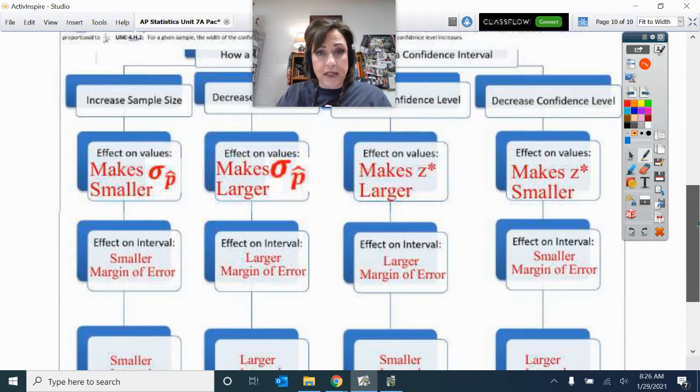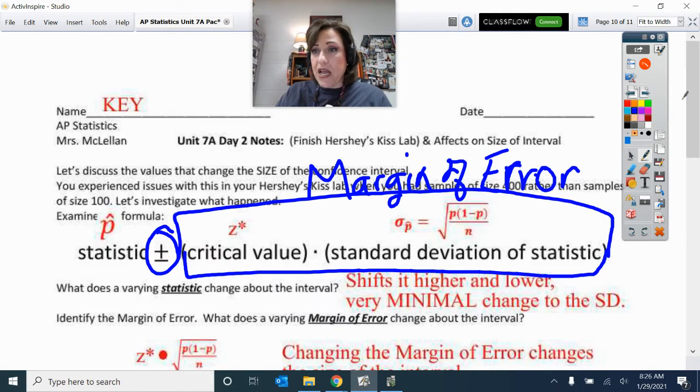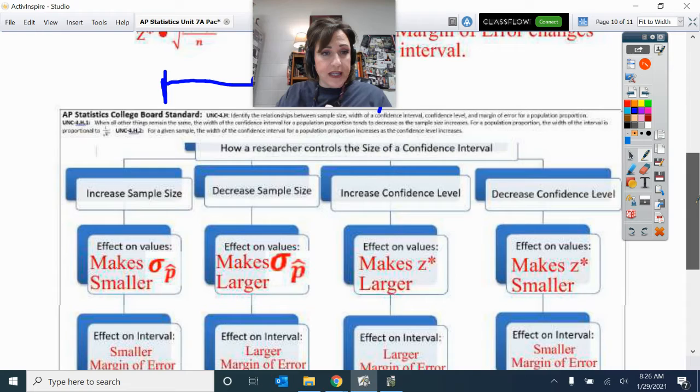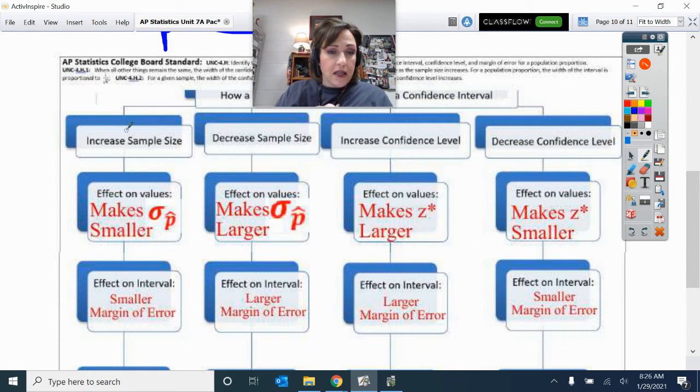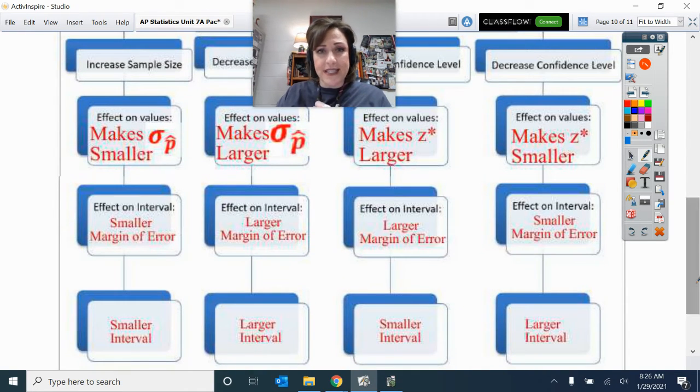Here it is, summarizing everything. Increasing the sample size, bumping it up, made that standard deviation of the samples smaller. So then that being smaller, the product that makes the margin of error is smaller, and then the interval is smaller. I have my students fill this in in class. They kind of walk through this on their own.